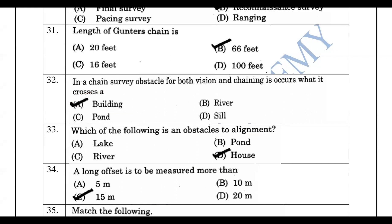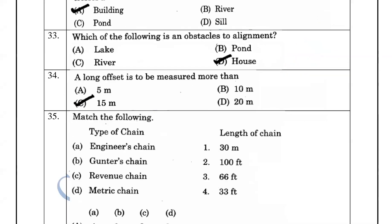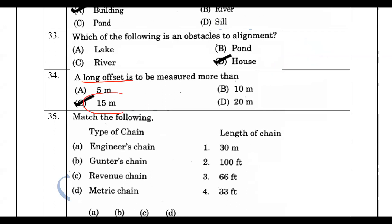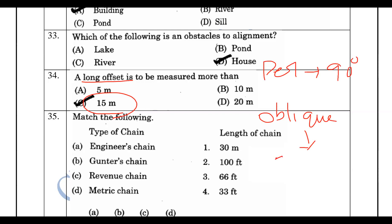A long offset is more than 50 meters, while a short offset is less than 50 meters. Types of offset include perpendicular offset at 90 degrees and oblique offset at angles other than 90 degrees.